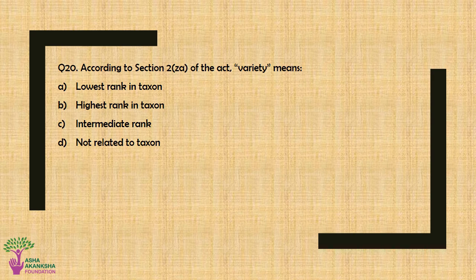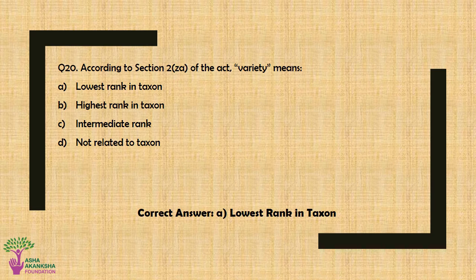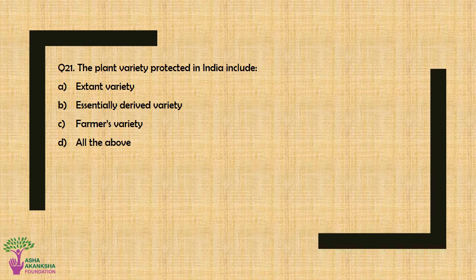Question No. 20: According to Section 2(za) of the Act, 'Variety' means — Option A: Lowest rank in taxon, Option B: Highest rank in taxon, Option C: Intermediate rank, or Option D: Not related to taxon. The correct answer is Option A — Lowest rank in taxon.